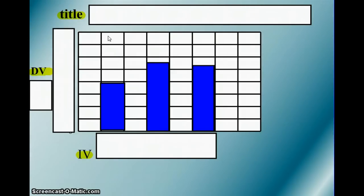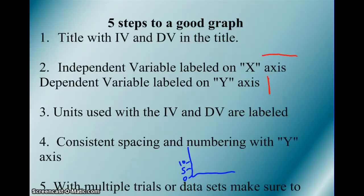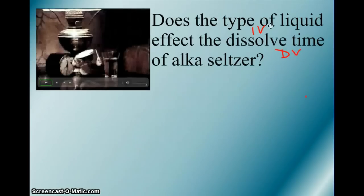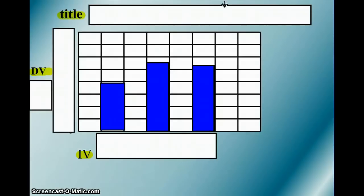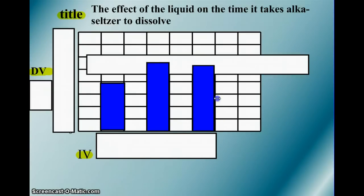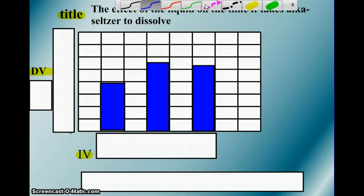So, let's look at a graph. If we were graphing the Alka-Seltzer experiment, does the type of liquid affect the dissolved time of Alka-Seltzer? We need a good title with independent and dependent variables in there. Here's our title. The effect of the liquid, here's our independent variable, on the time it takes Alka-Seltzer to dissolve, there's our dependent variable. Having an understanding of independent and dependent variables is vital to making a graph here.